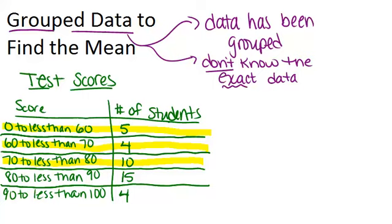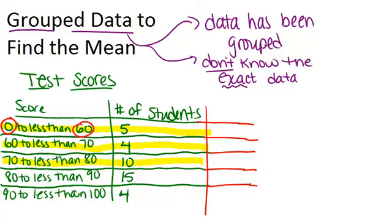So to find the midpoint for each group, you're basically thinking about what's the number that's exactly in the middle of the two numbers, or that's the same thing as finding the average of your outer limits of the group.